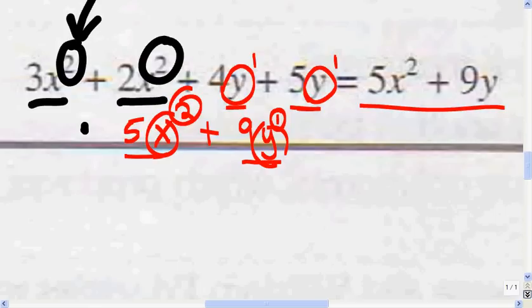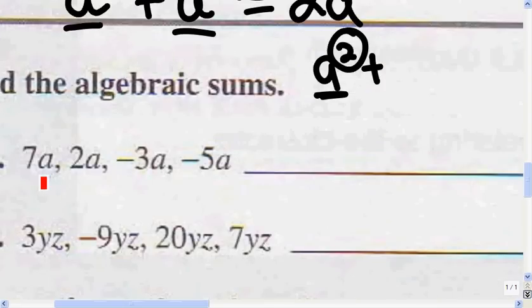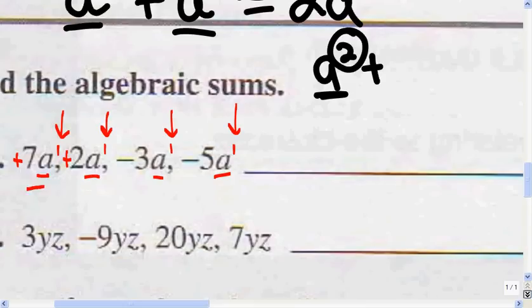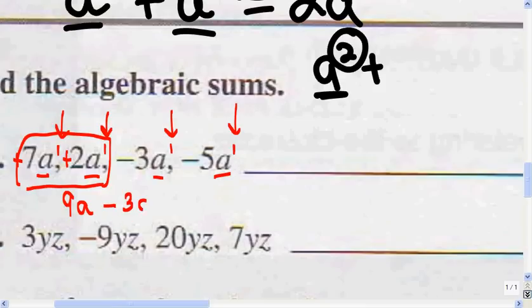Understanding this will help you do this next section. Let's look at the first problem. We have a here, a here, a here, a here. So all these are like terms because the variables are the same and the exponents are the same. When there's no exponent, the exponent's understood to be 1. So we can add all of these terms. 7a plus 2a — when there's no sign in front, it's positive — gives us 9a. Then 9a minus 3a equals 6a.